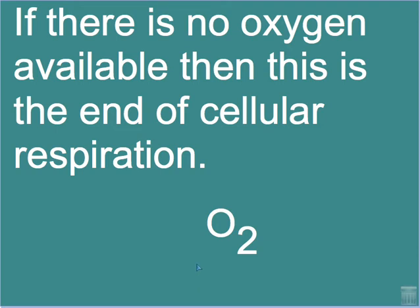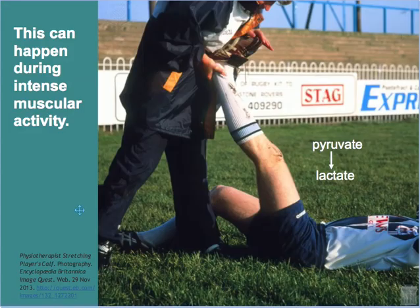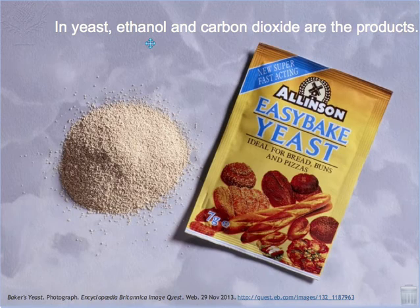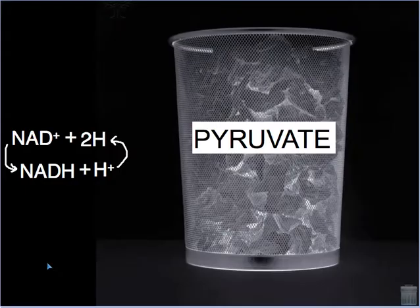If there is no oxygen available, then this is the end of cellular respiration. This can happen during intense muscular activity. Ultimately pyruvate becomes lactate, and the build-up of lactate — as in the case of a rugby player at the end of a match — can be a source of muscle cramping. In yeast, pyruvate gives rise to ethanol and carbon dioxide.